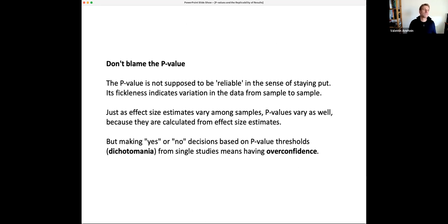So as I already introducingly stated, don't blame the p-value. The p-value only does what it is supposed to do. So it has some fickleness, but this fickleness honestly indicates the variation in the data from sample to sample. And just as effect sizes vary among samples, so the p-value does this as well because it's simply calculated from effect estimates. The problem is that we take one threshold, whether it's arbitrary or not, today it's still arbitrary 5%, and making yes or no decisions. Then we have a problem because half of those decisions in the examples I showed you earlier will be wrong.